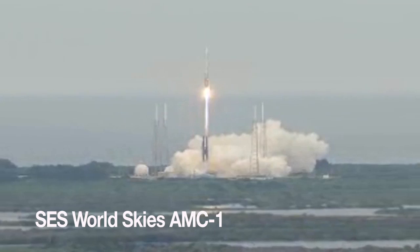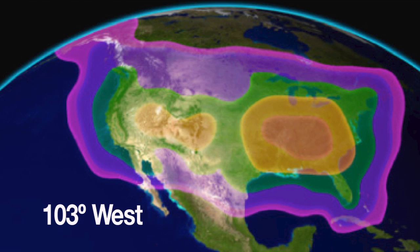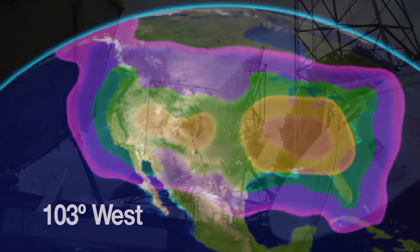Microspace uses the SES WorldSky satellite AMC-1, which was launched aboard an Atlas rocket in 1996. AMC-1 is in the orbital slot at 103 degrees west, a position that allows it to cover the entire continental United States.